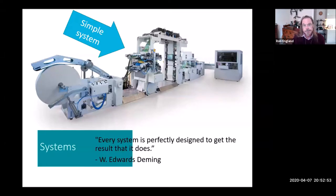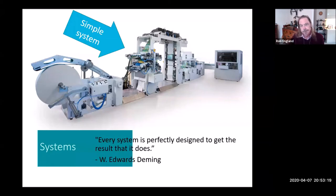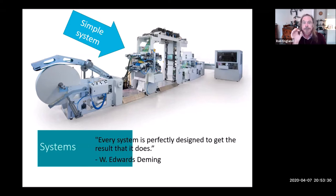Simple systems are systems that we understand — systems where we can model them. We can write an equation or draw a model where the inputs have a relationship to the outputs. This machine here is the one that prints my books: paper goes in one end, your digital request comes in, it creates one book, binds it, shoves it in a mailing bag, slaps your address on it and fires it out to the postal system. It's an extraordinarily complicated machine, but it's a simple system.